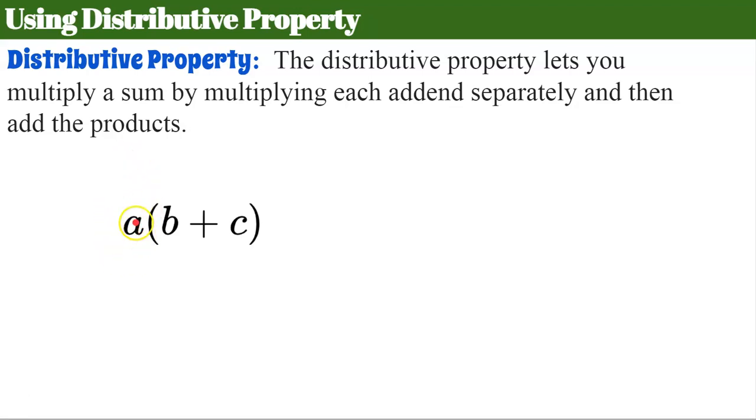So I have a parentheses b plus c. Anytime in algebra that we see a variable or a value next to a parenthesis or even next to another variable we know that there's an invisible multiplication sign right here. So this is really a multiplied by the sum b plus c. We call this a sum because we're adding b plus c and when we add our answer to that is a sum.